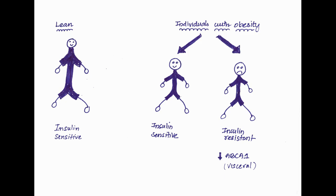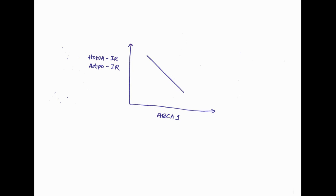In contrast, individuals who are obese and insulin resistant had significantly lower ABCA1 expression in visceral adipose tissue. ABCA1 expression in visceral adipose tissue had significant negative correlation with insulin resistance at whole body level and adipose tissue level.